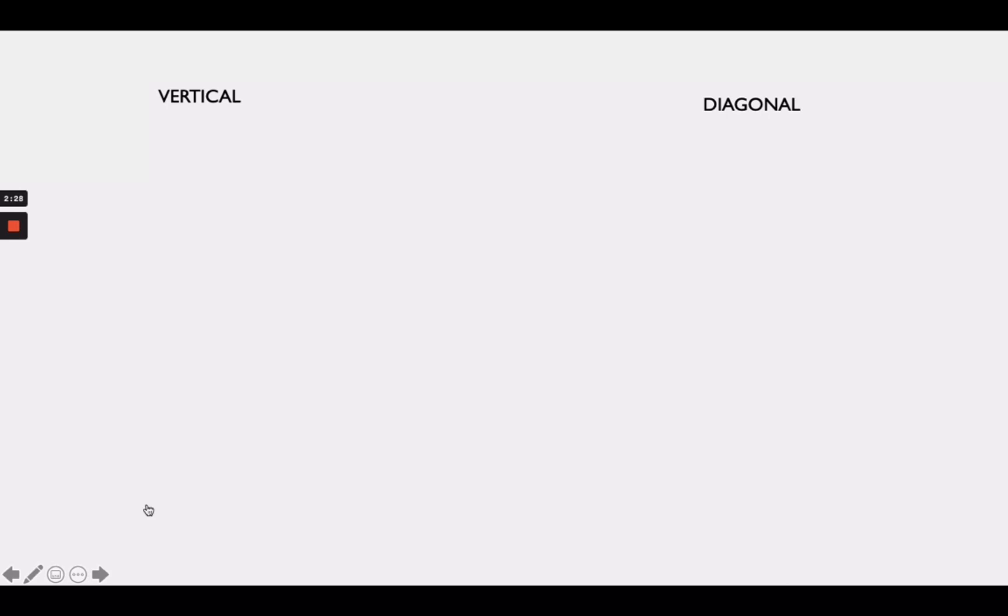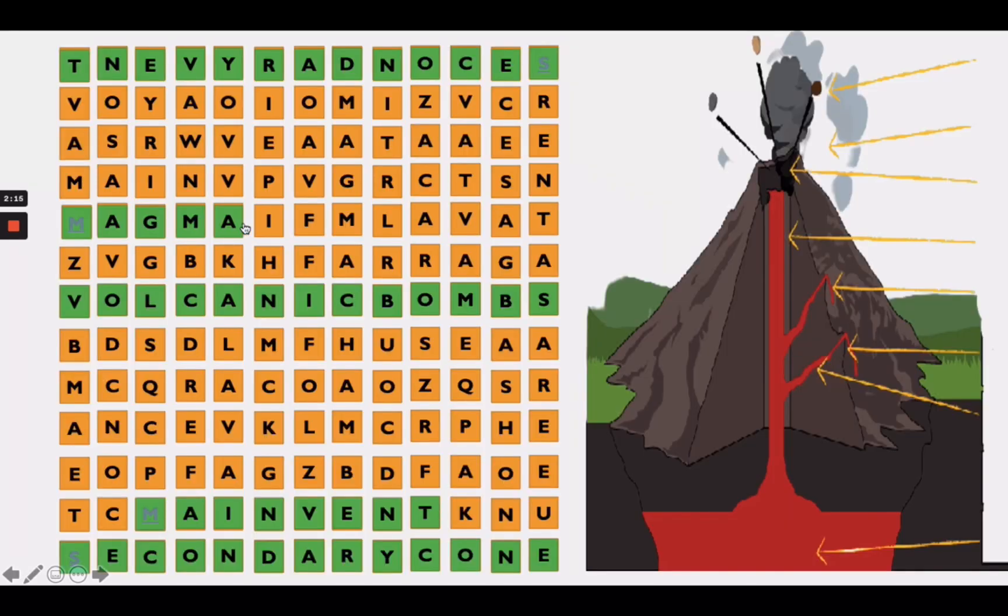Now, let's proceed to the next question. For the answer, you can find it vertically. It refers to the molten rocks after it reaches the surface. You're right! It's lava!